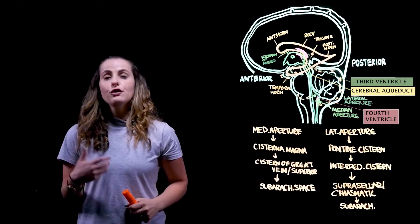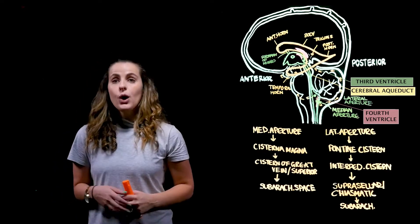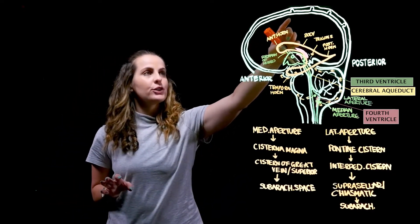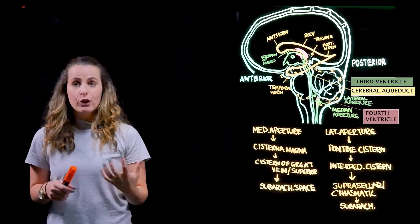So then lastly, from here, it's then going to circulate anteriorly around the frontal lobe within the subarachnoid space. We can notice if we're looking at the subarachnoid space, we have these little projections that are referred to as arachnoid villi.